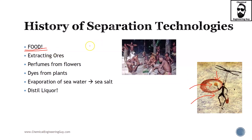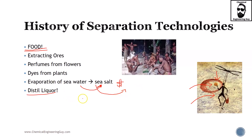There are a lot of processes involving separation technologies in food, but the important things I want to focus on are extracting ores, perfumes, dyes, and evaporation of seawater to produce sea salt. Salaries — the concept of salary — comes from how in ancient times salt was used as payment. Sea salt was quite expensive and used as an exchange commodity, as money, and also distillation of liquors.